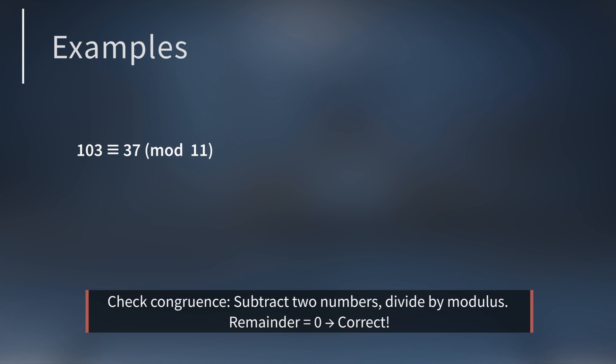For example, is 103 congruent to 37 mod 11? If you subtract the two numbers, you get 66. When you divide 66 by the modulus 11, you get a remainder of 0. In other words, 66 is a multiple of 11. So this is correct.